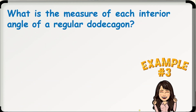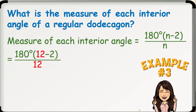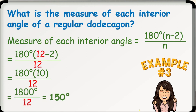Number 3: What is the measure of each interior angle of a regular dodecagon? Since a regular polygon with n sides has n interior angles, the measure of each interior angle equals 180 degrees times the quantity of n-2, divided by n. With 12 as the number of sides of a regular dodecagon, we have 180 degrees times the quantity of 12-2, divided by 12. Using PEMDAS: 180 times 10 is 1,800, divided by 12 equals 150. Thus, the measure of each interior angle of a regular dodecagon is 150 degrees.